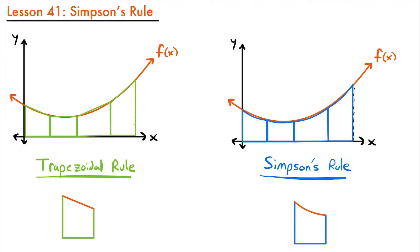Previously we have seen how to approximate that area using rectangles, whether that be right endpoints, left endpoints, or using midpoints. And most recently we have seen how to approximate that area using trapezoids with the trapezoidal rule. When we used the trapezoidal rule, we used these trapezoid shapes to try and fit the curve of the function to get an approximation of that area.